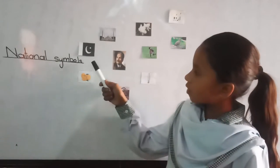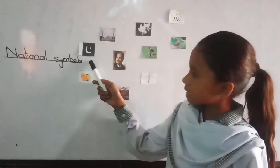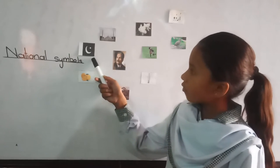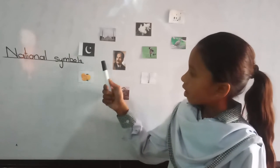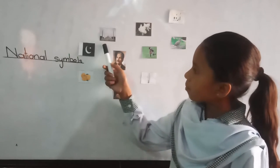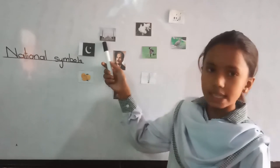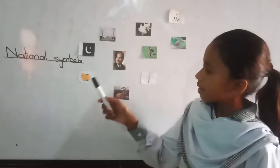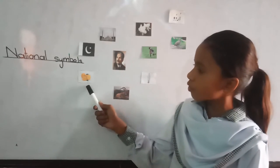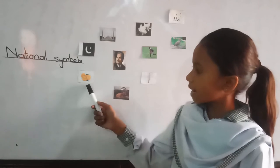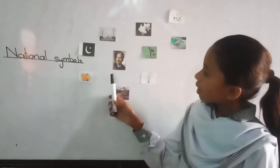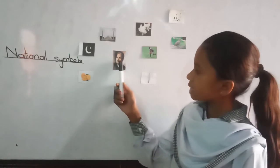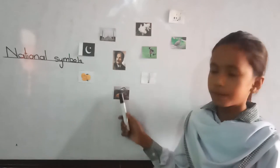National flag of Pakistan is green and white. National mosque of Pakistan is Faisal Mosque. National fruit of Pakistan is Mango. National poet of Pakistan is Allama Iqbal.